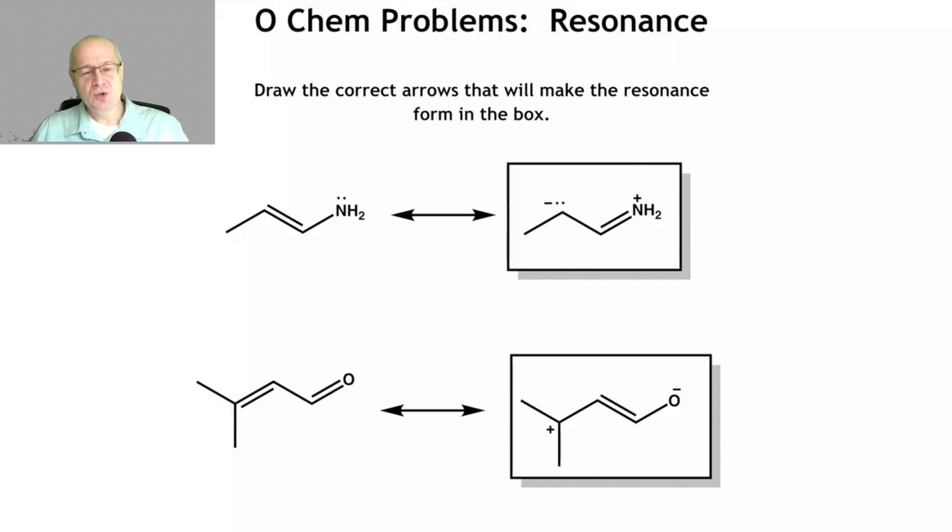So we're moving two electrons at a time. It looks like we're dealing with lone pairs right here. So we're going to be using double-headed arrows. Remember, double-headed arrows move two electrons. Single-headed arrows move one electron.